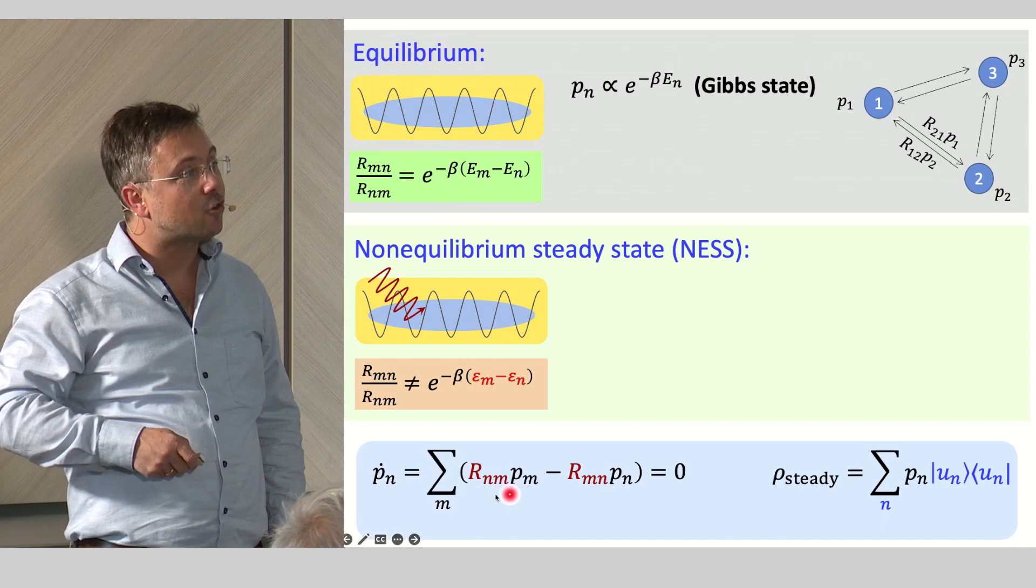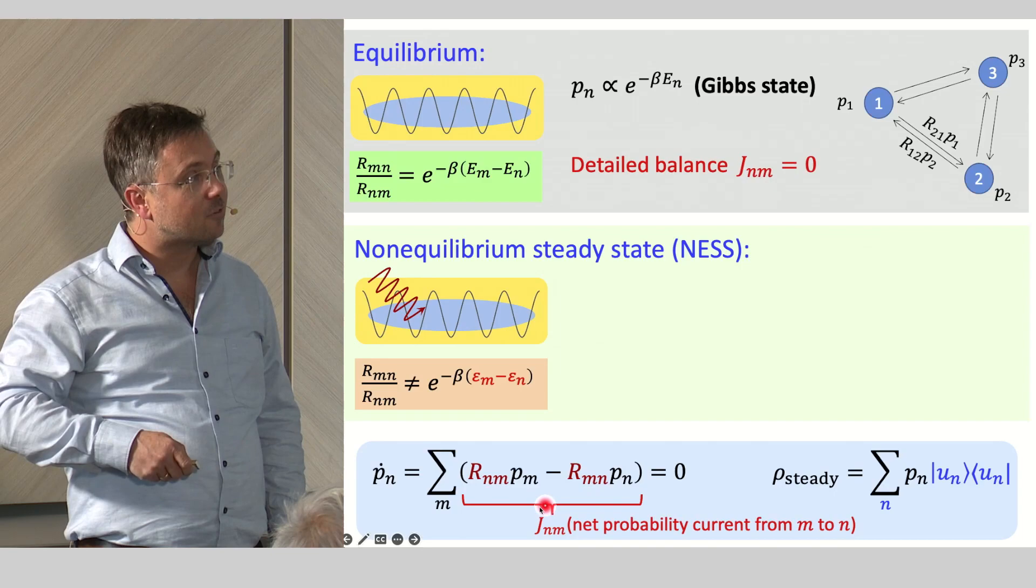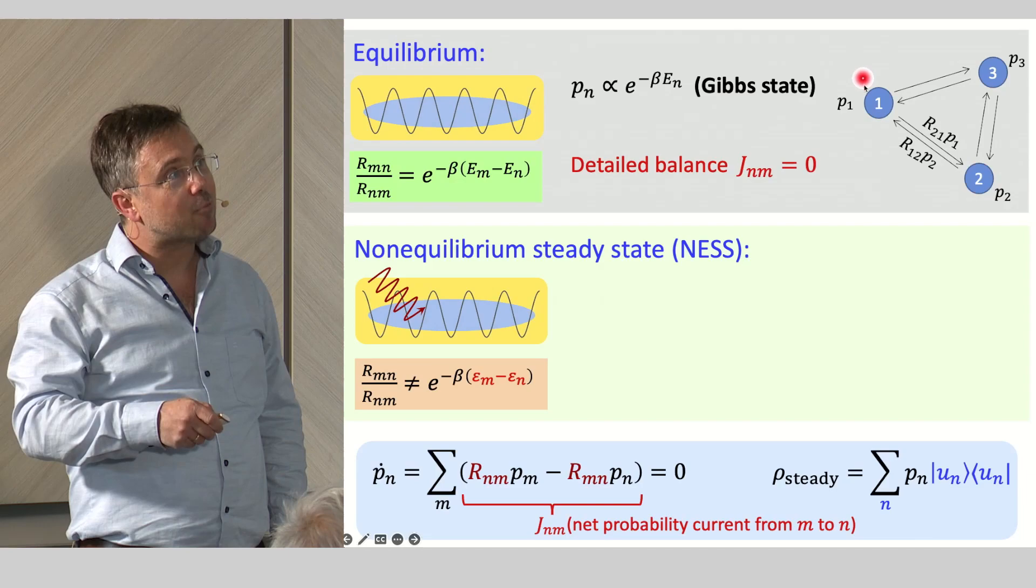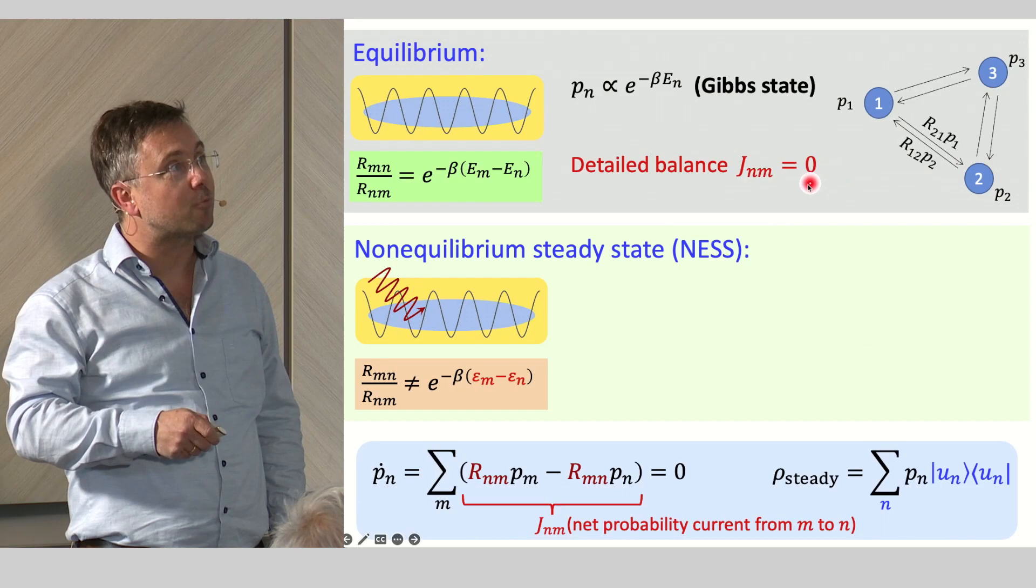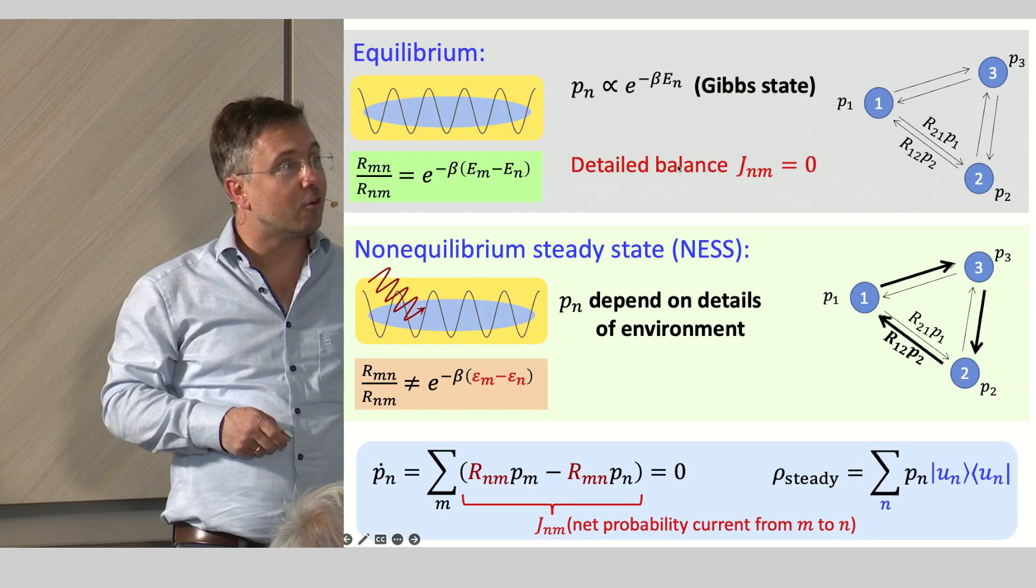And as a result, you find that your steady state is just the Gibbs state, depending via the temperature or the inverse temperature beta on the environment. And this state, if you plug it into this Pauli master equation, you see it solves this equation term by term. So every individual term vanishes. That means these terms describe the net probability flux from a state M to a state N. The net probability flux between each individual eigenstate of the system vanishes. This is what we know as detailed balance. This is the equilibrium situation.